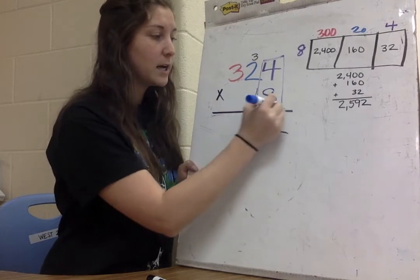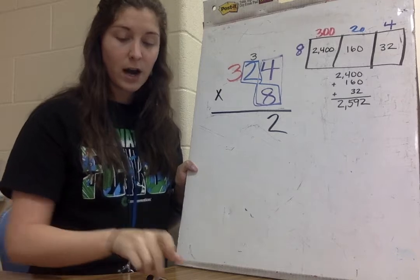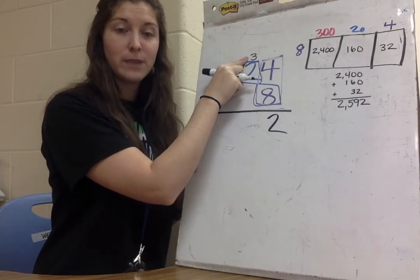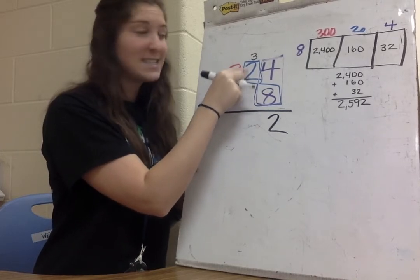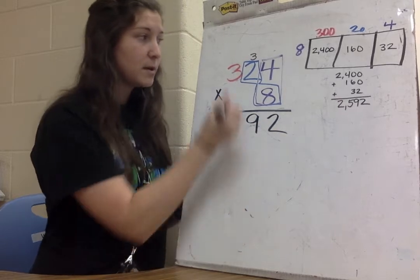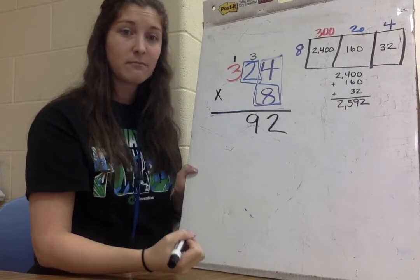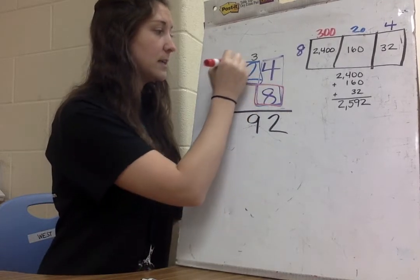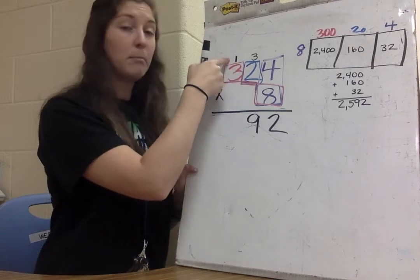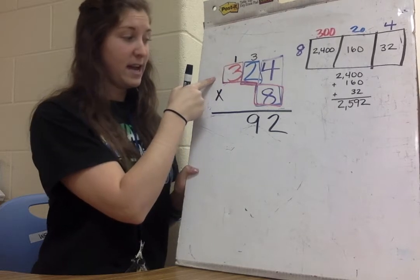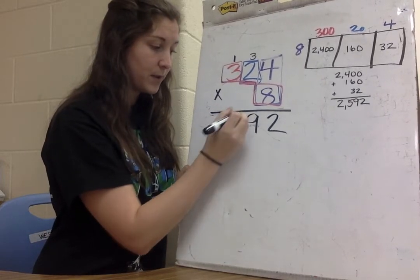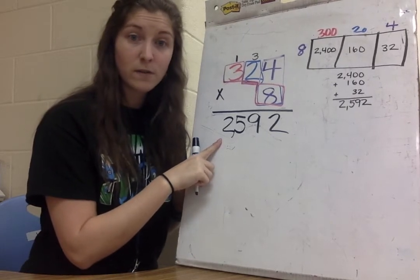Next I need to multiply 8 times 2, and I know that's 16. But I can't forget about this carried 3 — I have to add that to my 16: 16 plus 3 is 19. I put my 9 down and carry my 1 up on top of my 3. Last, I multiply 8 times 3, which is 24, plus the carried 1 is 25. Because there's no more digits, I put down the full 25. So my answer using standard algorithm is 2,592.